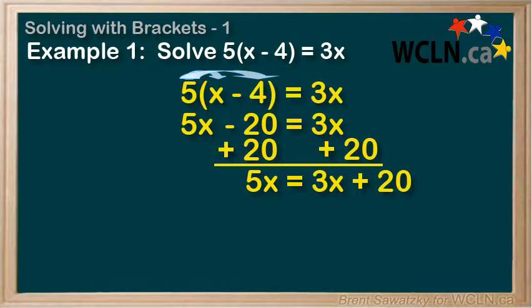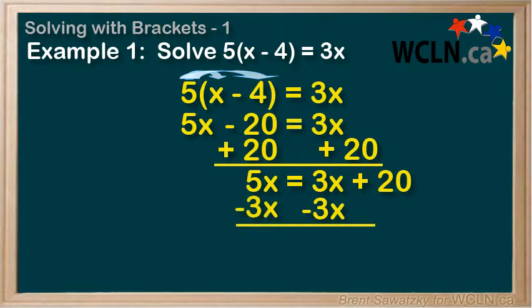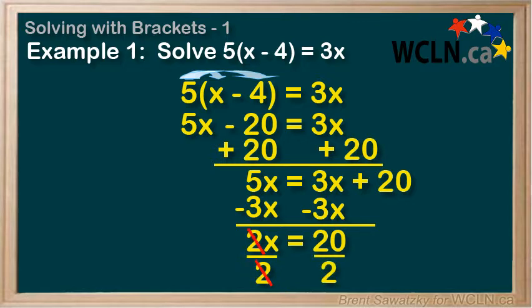We still have an x term on the right-hand side, and we want all x terms on the left as we isolate. The 3x is positive, so we subtract 3x from both sides. On the left, 5x minus 3x are like terms and equal 2x. On the right, we're just left with 20. Dividing both sides by 2, we're left with x on the left and 20 divided by 2 equals 10 on the right. Our solution is x equals 10.